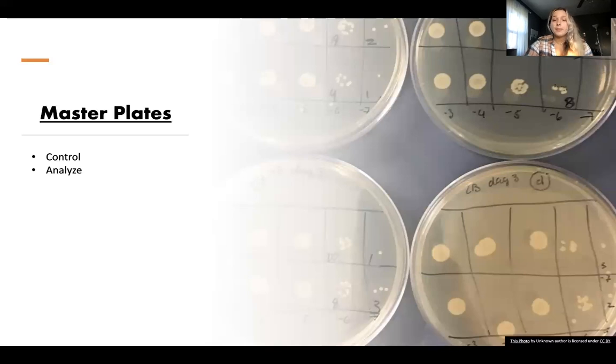Now I'm going to tell you about the master plates. The bacteria we found through serial dilutions were transferred onto master plates. Here is a great example of a master plate - these are very important to our experiment. They serve as a control where we can analyze the morphology, including color, size, and shape, and compare them side by side. It's important to have them all in one place as a control.